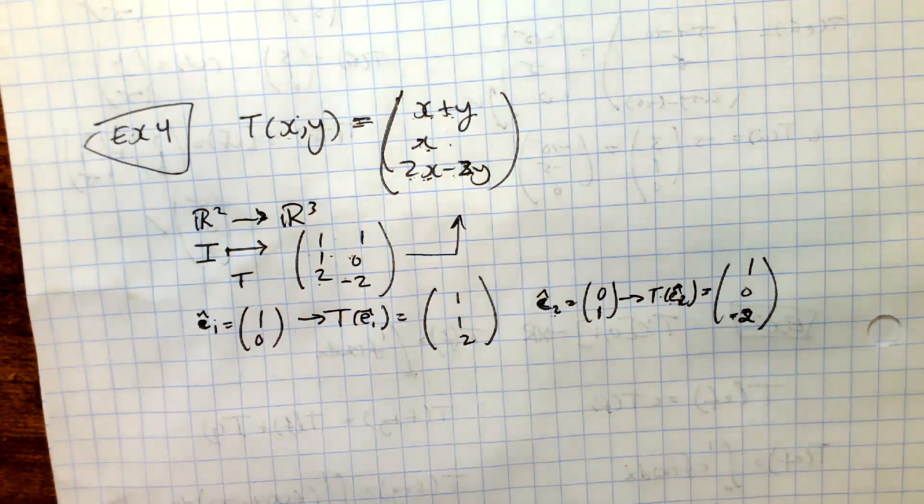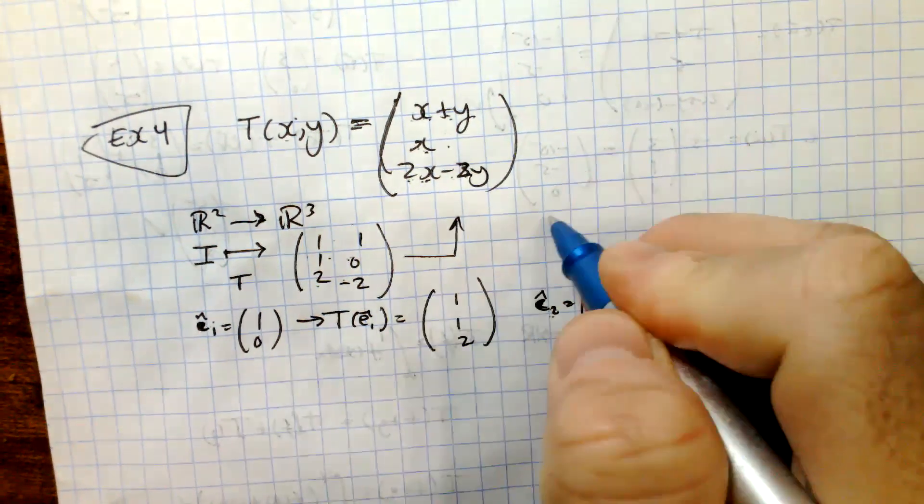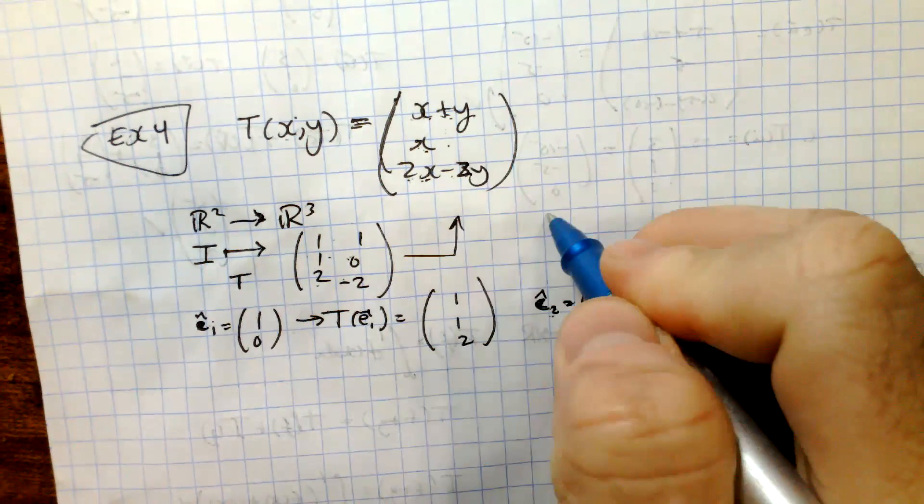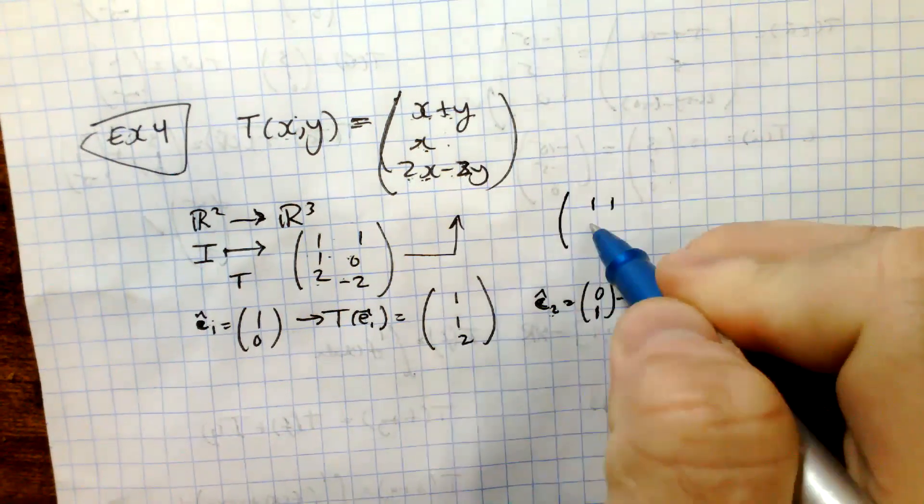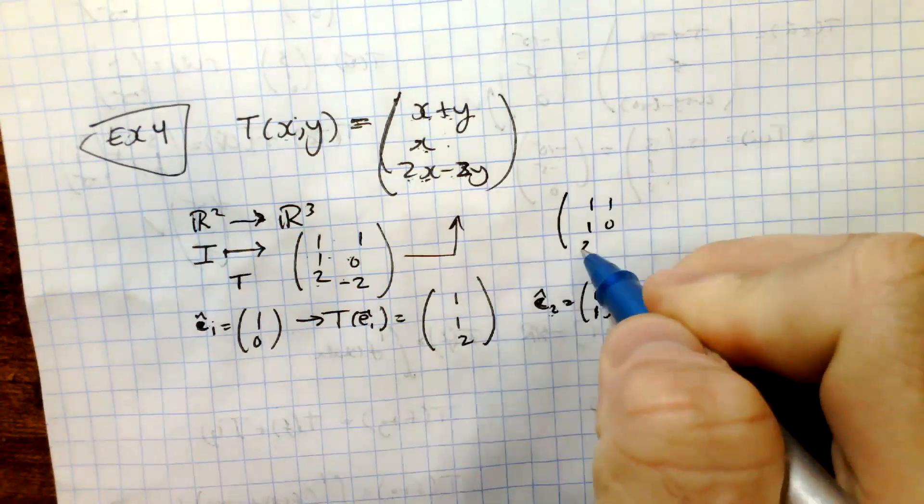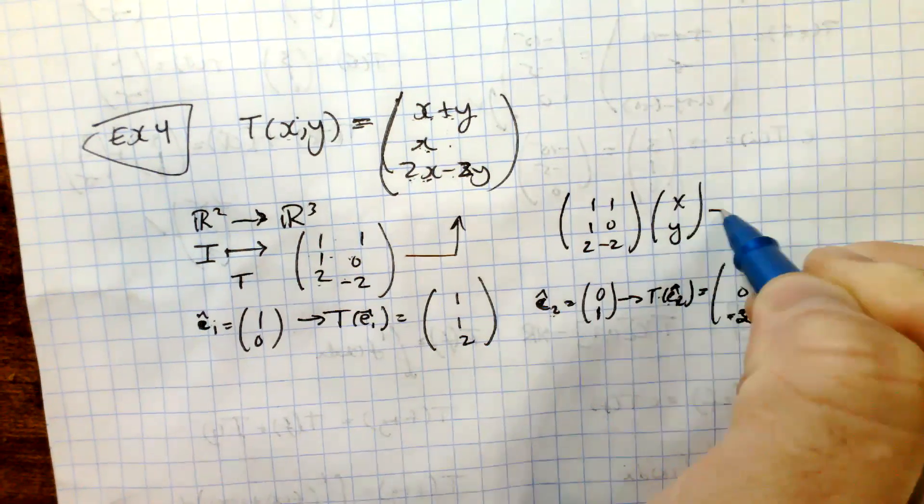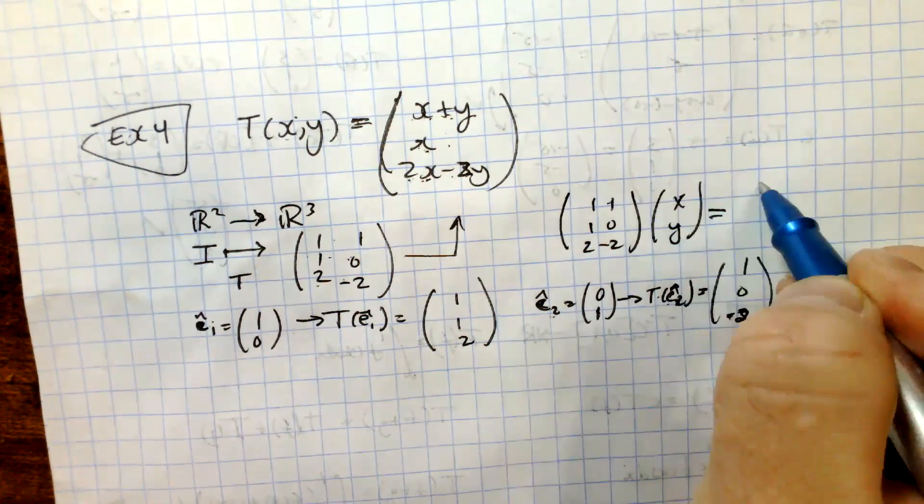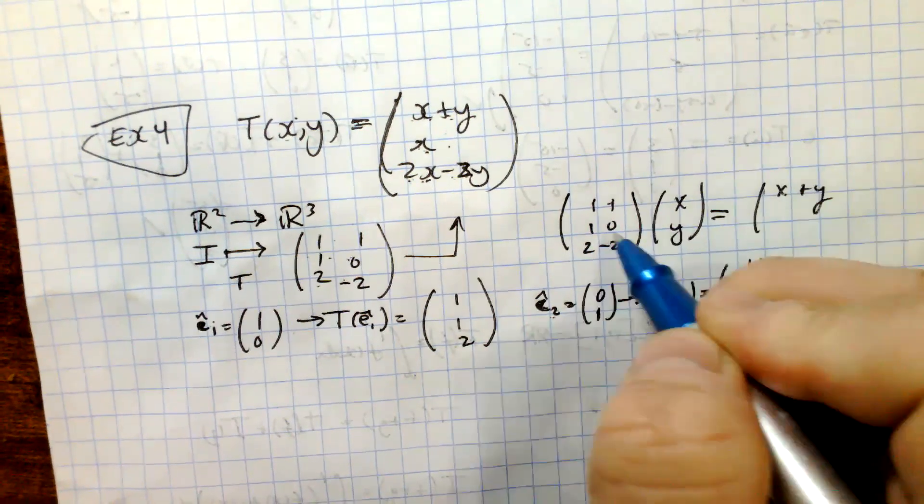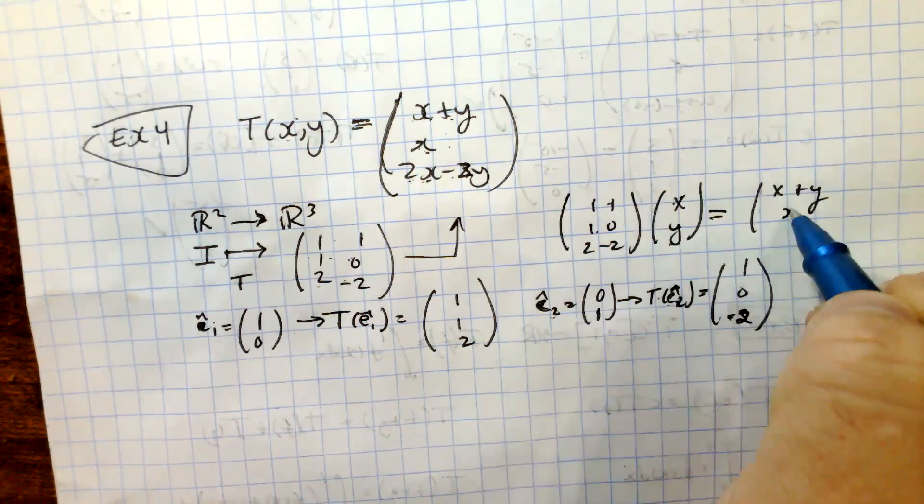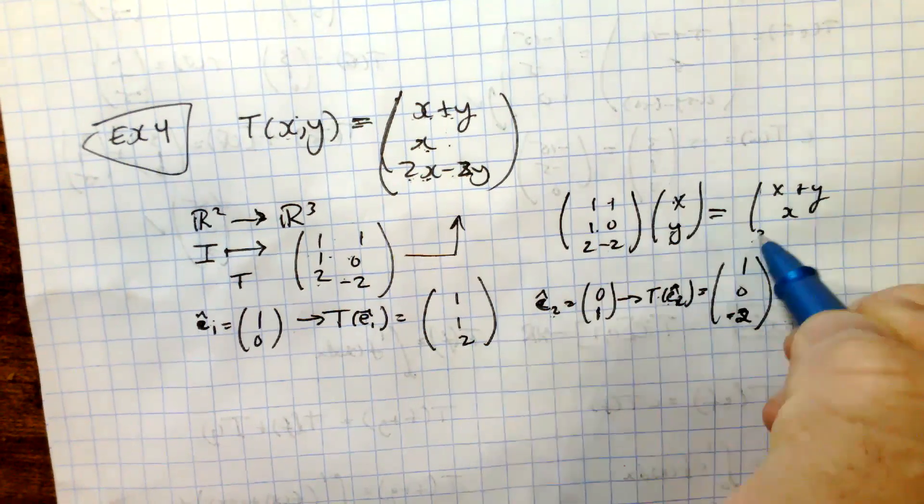And so let's try and check it out, multiply it out, just to make sure that we're recovering our actual transformation. So let's multiply 1, 1, 1, 1, 0, 2, negative 2, times x, y. And so this becomes x plus y, becomes 1x times 0, so x. And then we have 2x minus 2y.